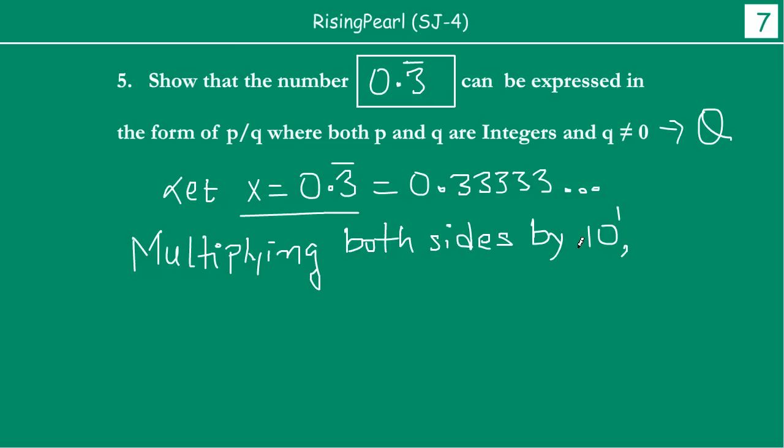So if we multiply this, then what happens? 10 to the power 1 is nothing but actually 10, right? So if we multiply this, what we will get is 10 times x equal to 0.33333... times 10. Now notice, if you have this number and you multiply it by 10, then what happens? The decimal moves one place to the right. So if you multiply any number by 10, the decimal shifts to the right, and if you divide any number by 10, the decimal shifts towards left. So this number will become, after multiplying by 10, it will become 3.33333... like this.